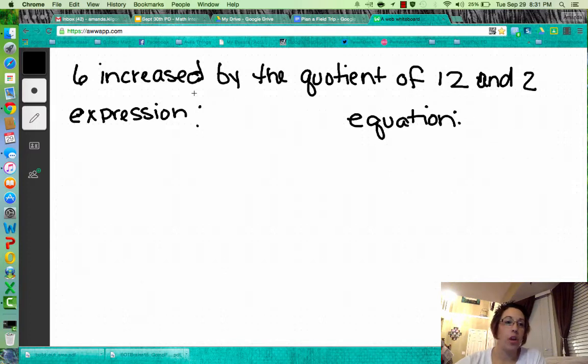Here's our first one. We have 6 increased by the quotient of 12 and 2. So we talked about our definition of an expression, which is a number sentence without an equal sign, and an equation, which is a number sentence with an equal sign and often solved. So we start looking at our phrase up here, and we want to start putting together some things that we know. We've got a 6. Oftentimes, we're going to write that 6 out for the expression.